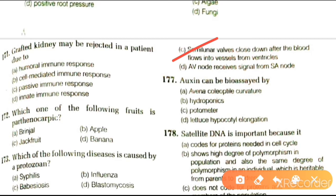When the semilunar valve closes, the second sound 'dubb' is heard. There are two normal heart sounds described as 'lubb' and 'dubb' — the first and second heart sounds produced by the closure of AV valves and semilunar valves respectively.